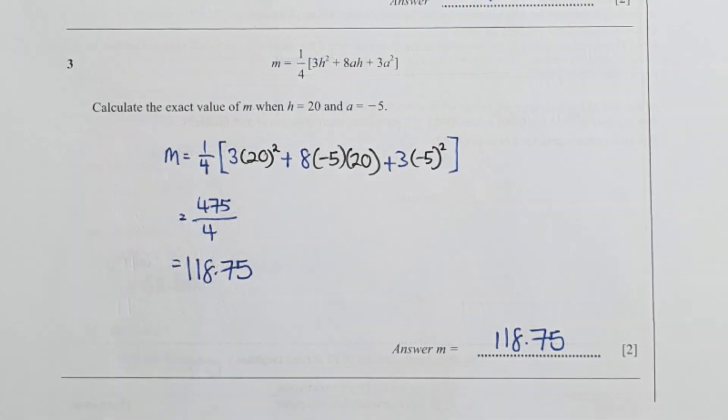For part three, simply substitute whatever value that was given into the equation. I use black pen to indicate it, so your final result will be 118.75.